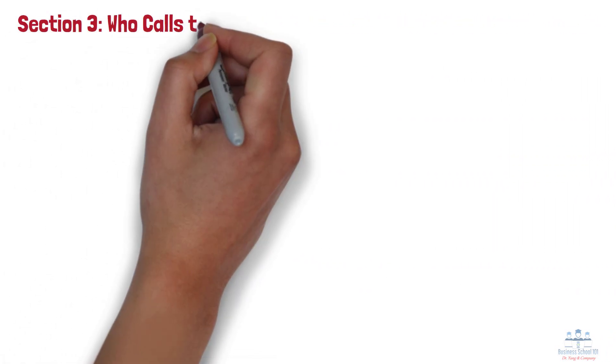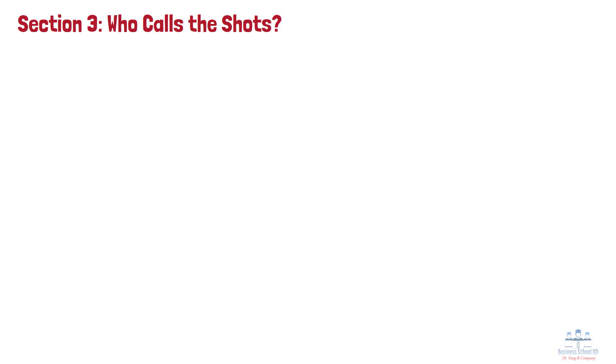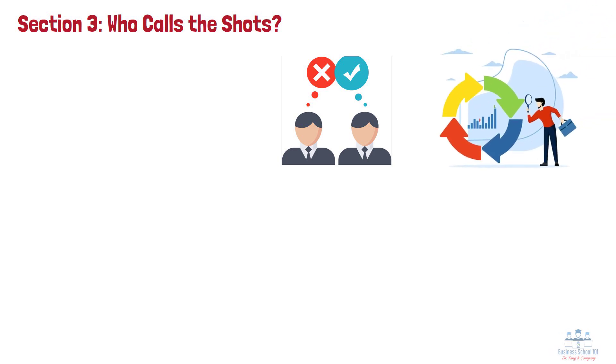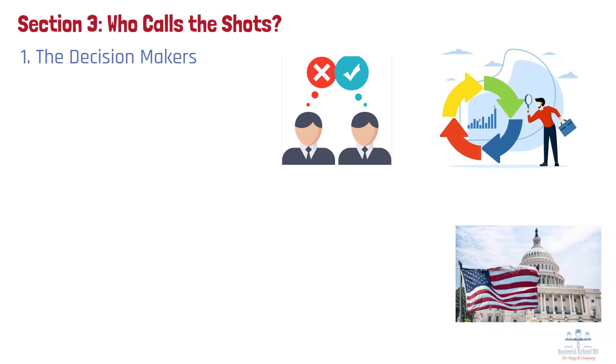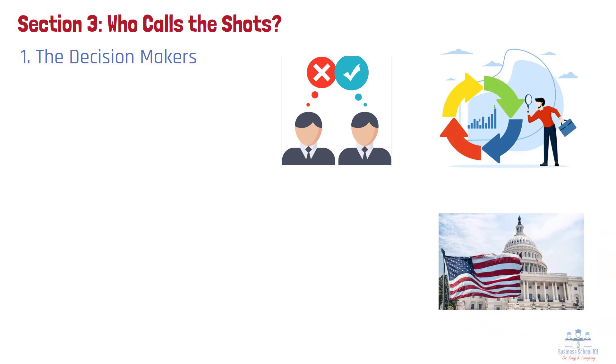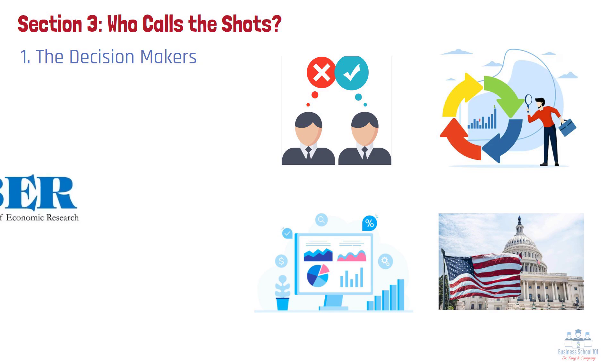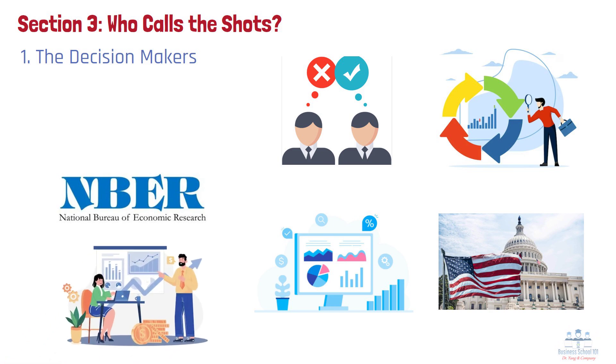Section 3: Who calls the shots? When it comes to identifying where we are in the business cycle, who gets to make the call? It turns out that determining whether the economy is in a recession isn't as straightforward as it might seem. Let's break it down step by step and look at the key players, the definitions they use, and how they decide the timing of these announcements. Number 1: The Decision Makers. Here's something that might surprise you. While the federal government tracks tons of economic data, they're not actually the ones who officially call recessions. That job belongs to a group called the Business Cycle Dating Committee at the National Bureau of Economic Research, or NBER for short. Think of them as the economy's referees, making the official calls from their headquarters in Cambridge, Massachusetts.